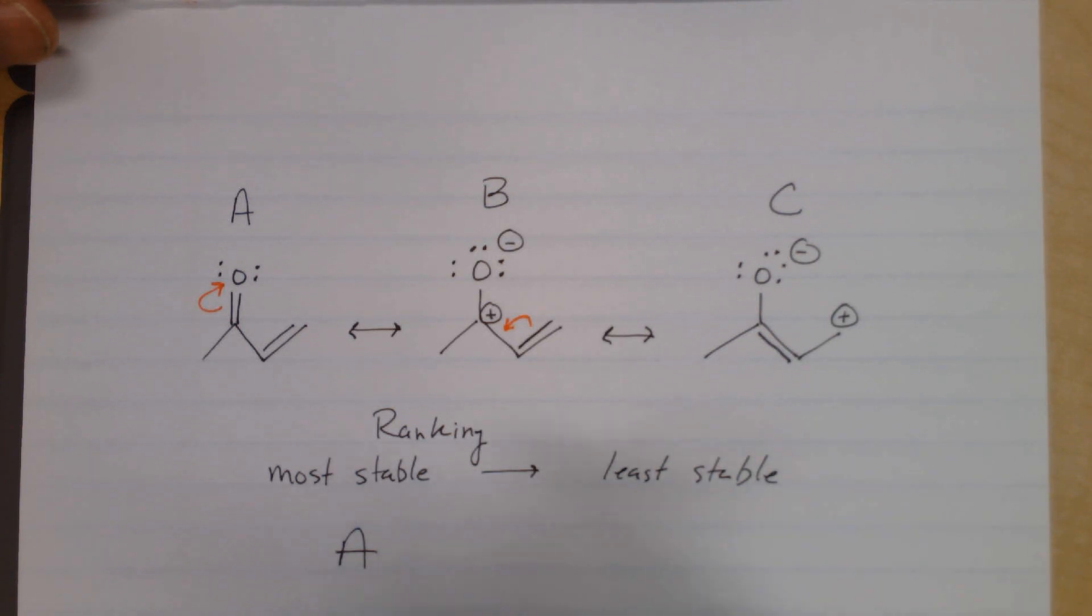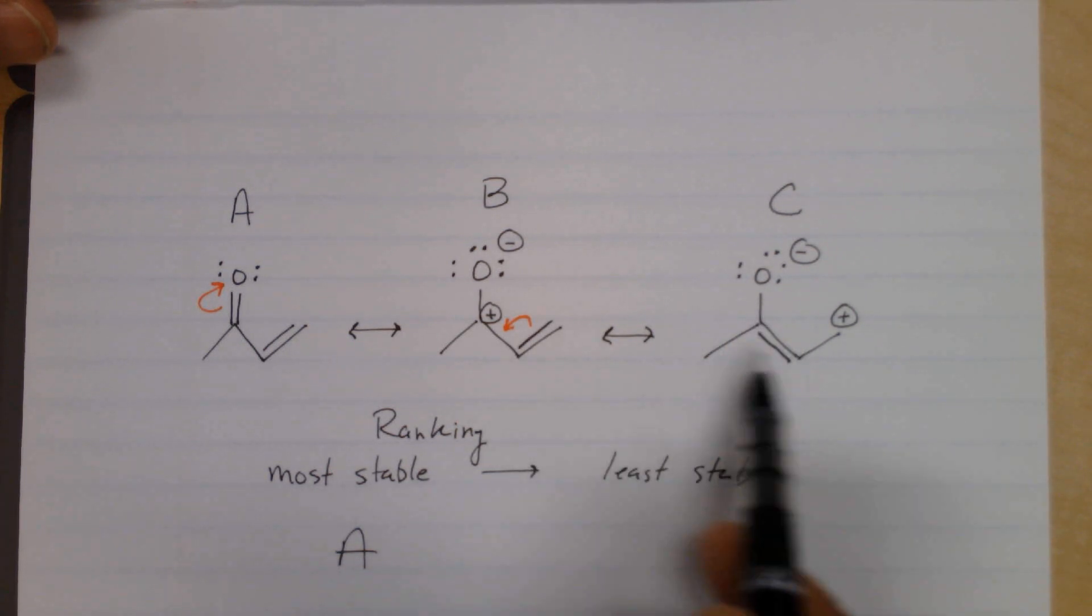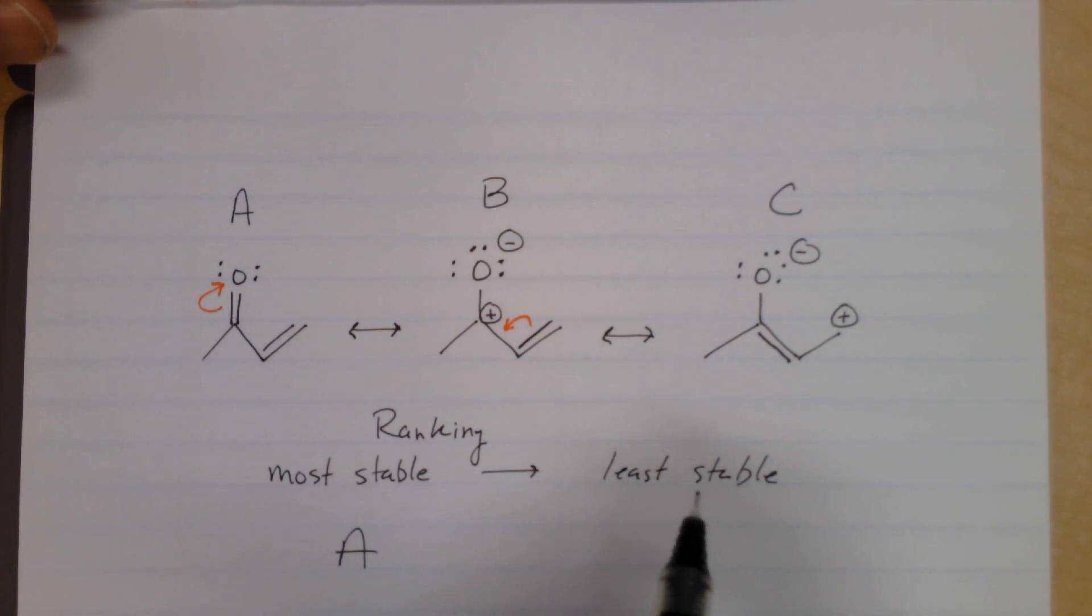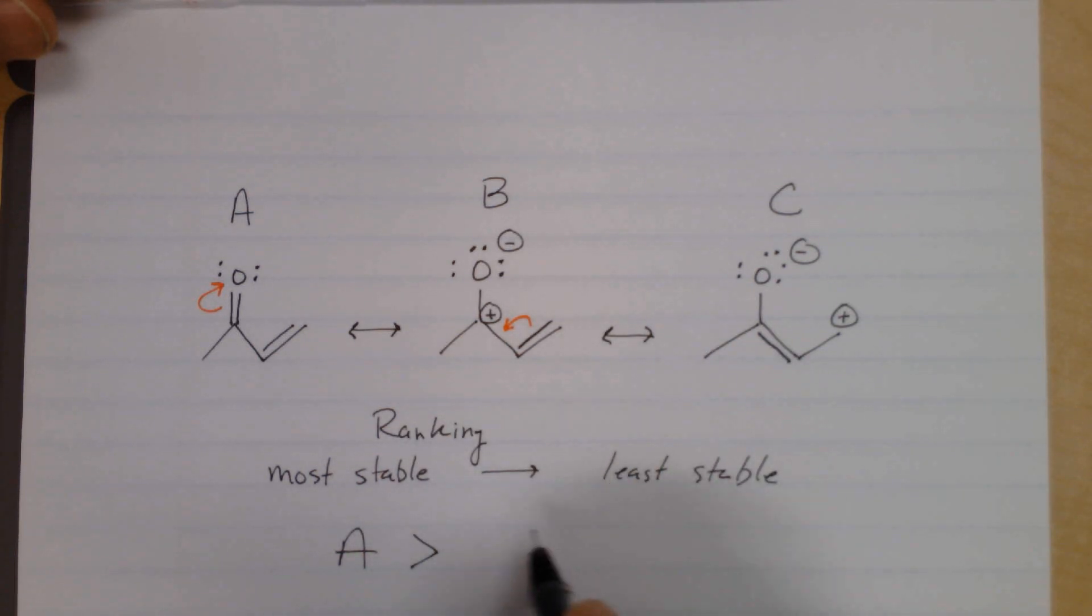Okay, so these two do have formal charges. There's a negative charge on the oxygen in both cases, and in both cases you have a positive charge on a carbon. And so in this case, A would be more stable than B and C, and these of course would be equal.